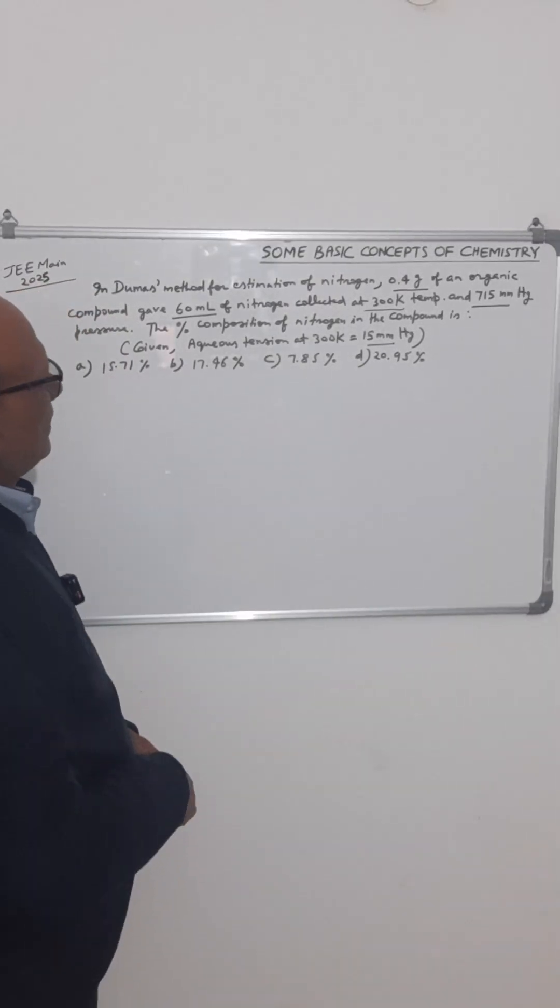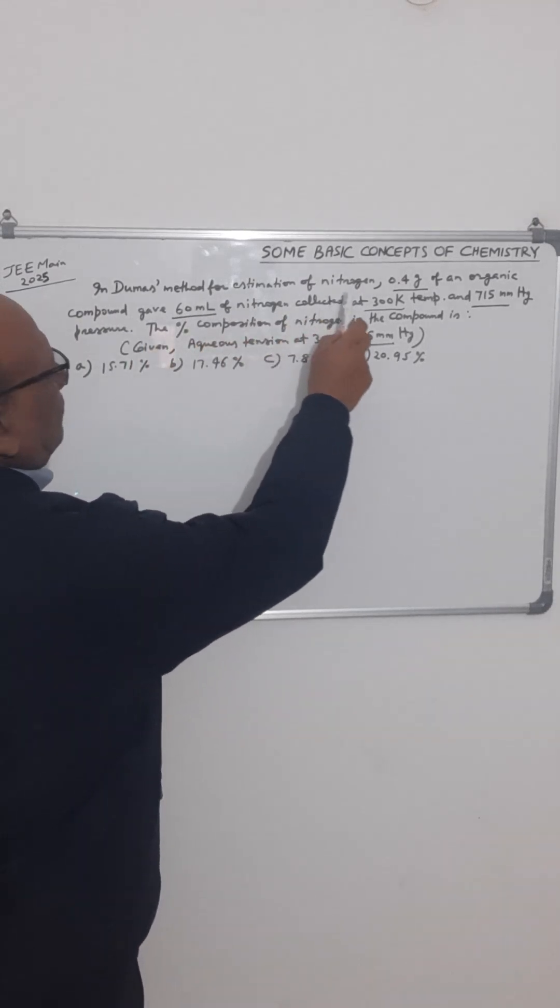Good morning, Bacho. This question related to some basic concepts of chemistry was asked in JMS 2025. It's about Duma's method for estimation of nitrogen.